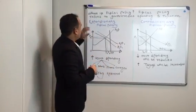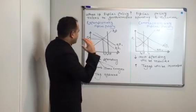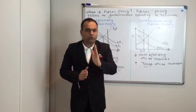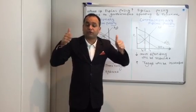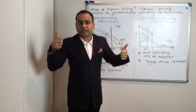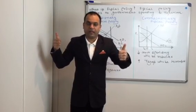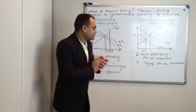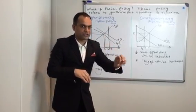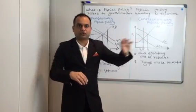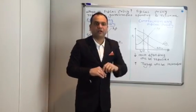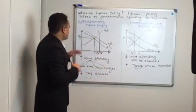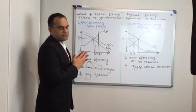When it comes to expansionary fiscal policy, in expansionary fiscal policy, when the government sees that the economy is going through recession — remember, an economy can either be in recession, inflation, or full employment, those are the three scenarios. When the government sees that the economy is going through recession, meaning people are not spending enough money in the market and there are fewer jobs, they will use this tool — expansionary fiscal policy — to boost the economy, boost the GDP, and boost revenue.